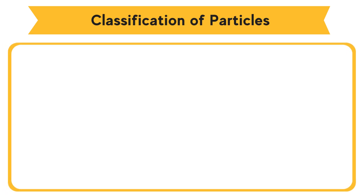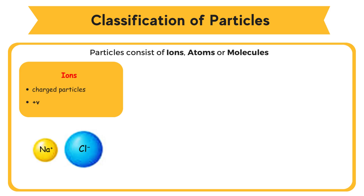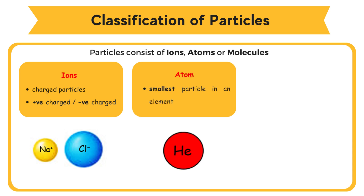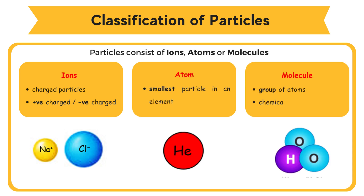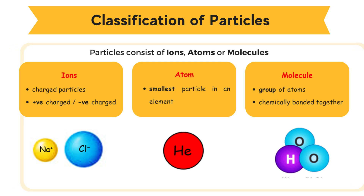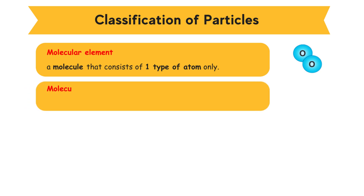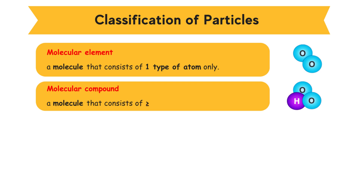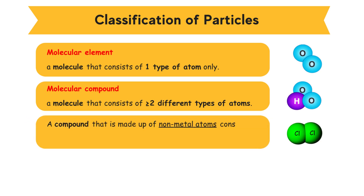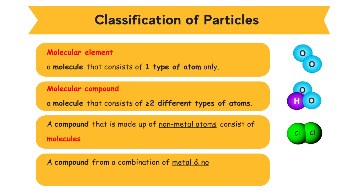Classification of Particles. Particles consist of ions, atoms, or molecules. Ions are charged particles, which are positively charged or negatively charged. Atom is the smallest particle in an element. A molecule is a group of atoms that are chemically bonded together. A molecule that consists of one type of atom only is a molecular element. A molecule that consists of two or more different types of atoms is a molecular compound. A compound made up of non-metal atoms normally consists of molecules. A compound formed from a combination of metal and non-metal atoms normally consists of ions.